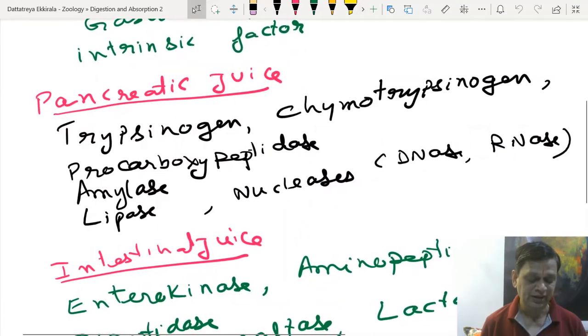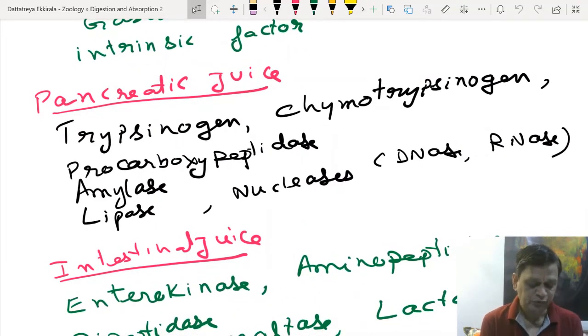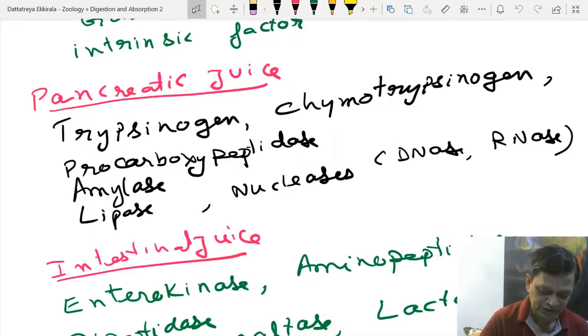Pancreatic juice from the second largest gland contains protein digesting enzymes like trypsinogen, chymotrypsinogen, and procarboxypeptidase. Carbohydrates are digested by amylase. Lipids are digested by lipase. Nucleases are nucleic acid digesting enzymes—DNases and RNases.